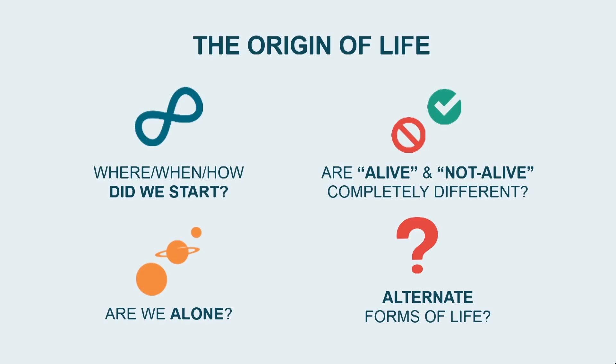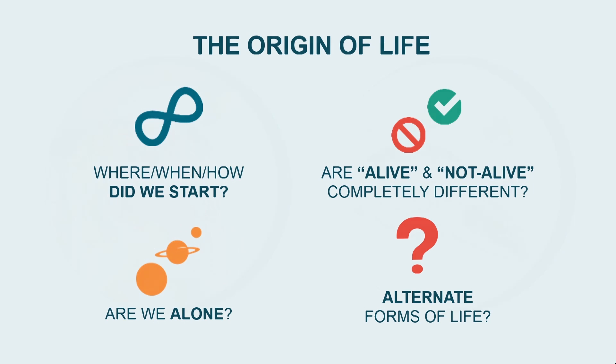With that introduction, what we need to do first is narrow the field a little, since life is a big subject. Here are two calibrating images. The one on my left, deeply interesting to me, is my grandson. The one on my right, not so interesting to me, is a microorganism. The thing is, they're the same, in a sense. If I take apart the grandson, he's made up of cells; the microorganism is a cell. The cell is the smallest thing that's alive — that's what we need to pay attention to.